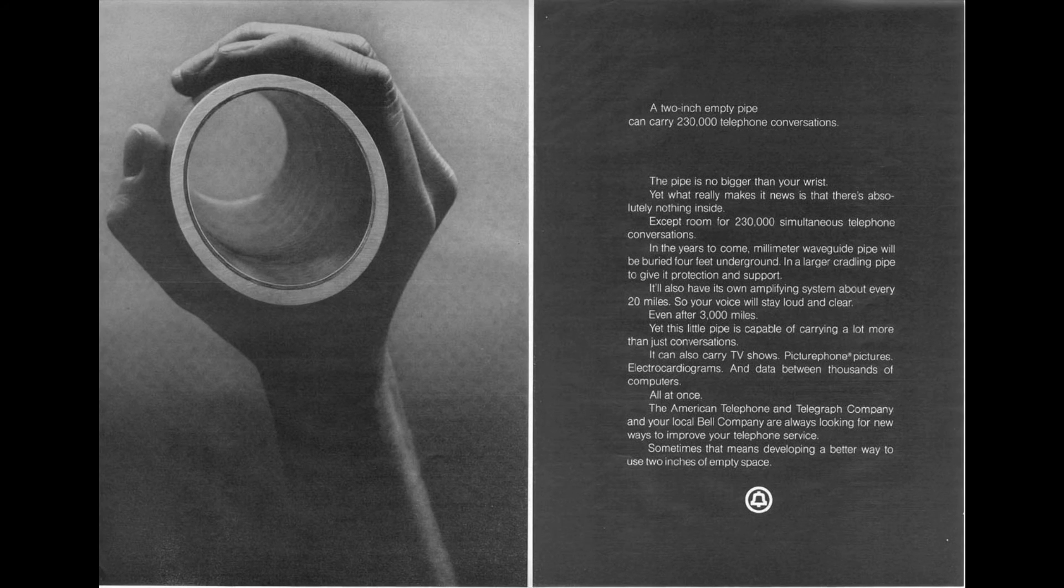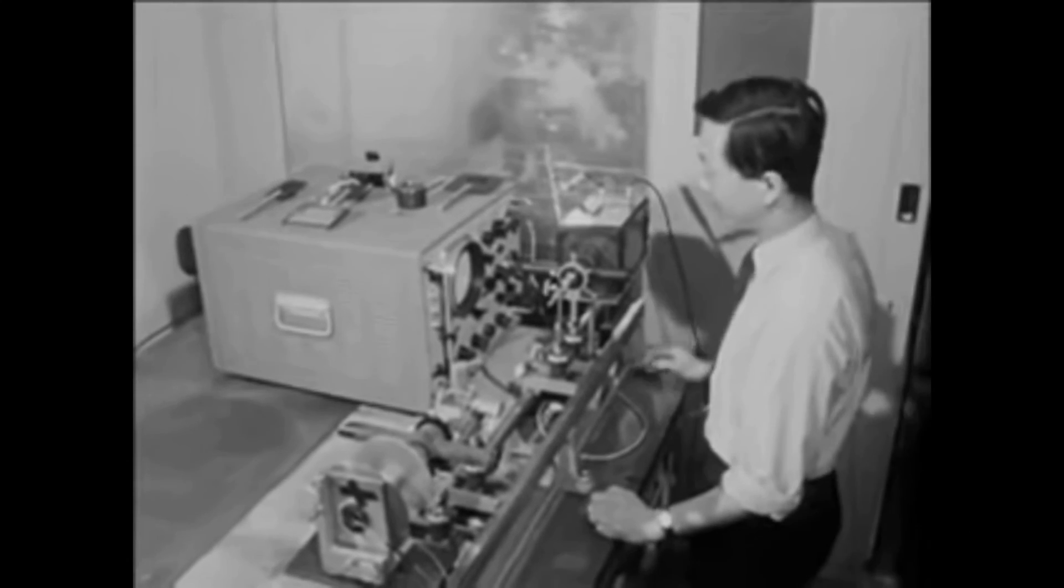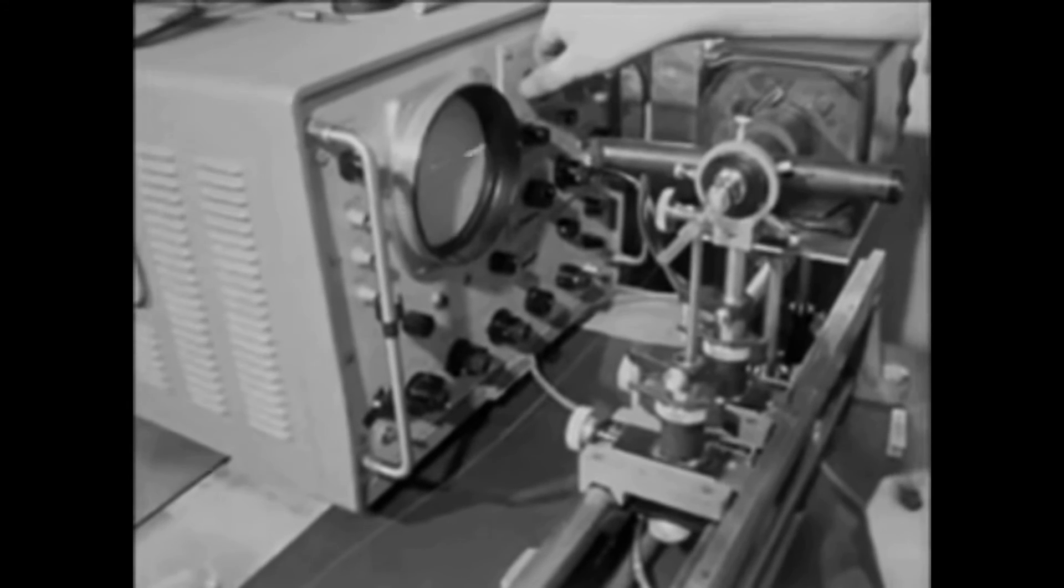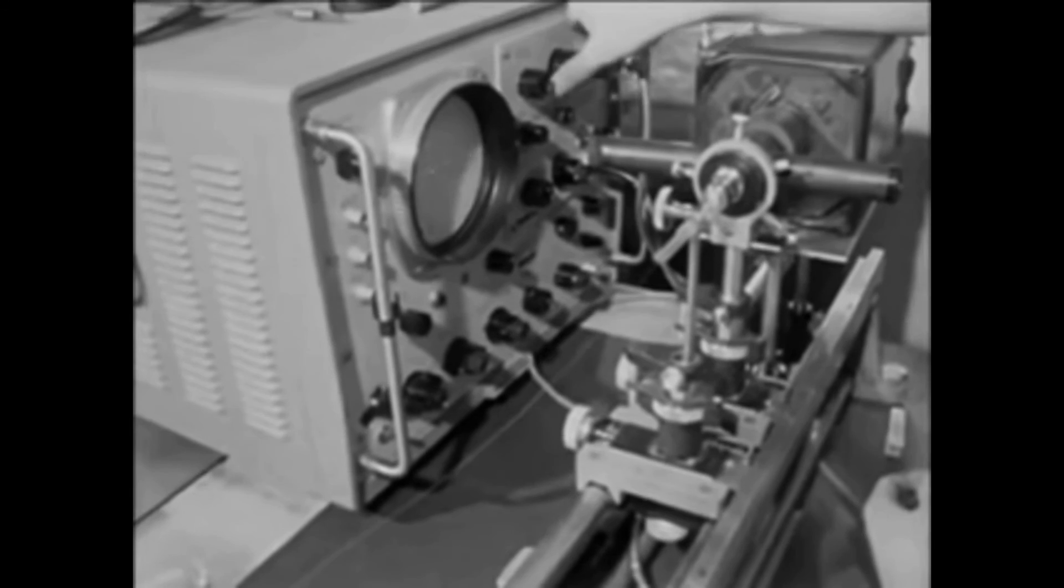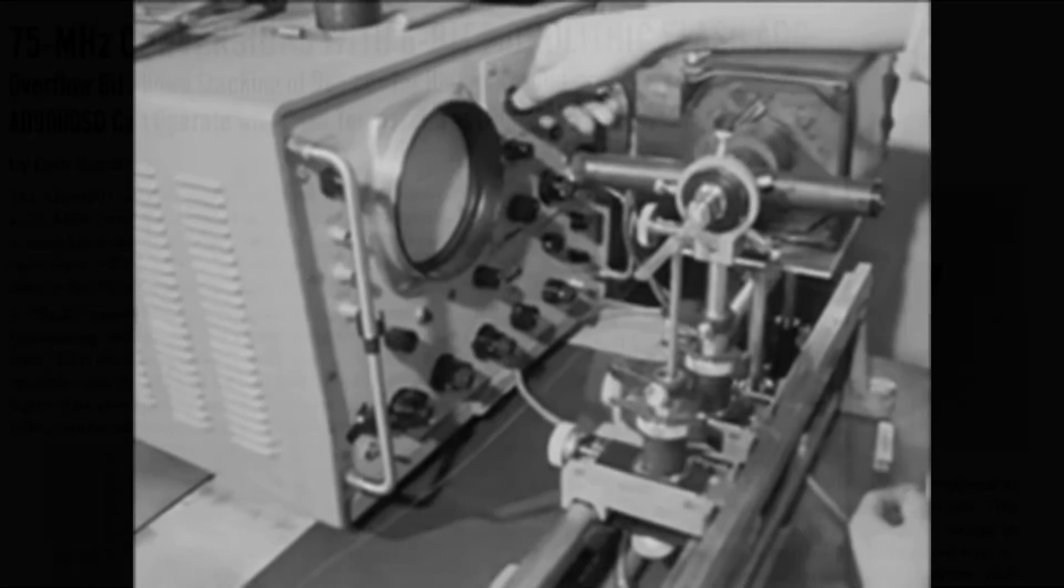AT&T was convinced that underground millimeter waveguides would provide the transmission capability for a high-speed network and in 1977 developed the WT4 system, which operated at 274 megabits per second using circular waveguides. But developments in low-cost optical fiber networks made the high-cost WT4 system impractical. True high-speed digital networking would finally be achieved over optical fiber networks in the early 1980s.